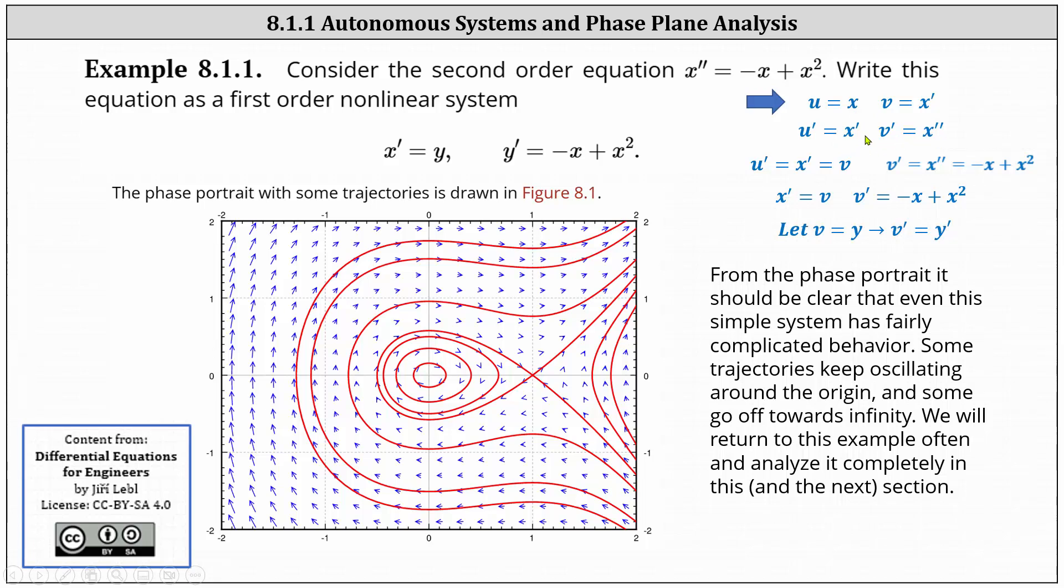Well, we know x' is equal to v, which gives us x' = v. We know x'' is equal to -x + x², which gives us v' = -x + x². So we could have written the first order system in this form, but notice our text is using y instead of v. And therefore, we simply replace v with y and v' with y'.